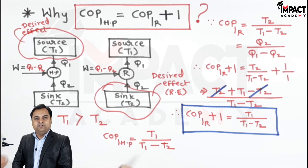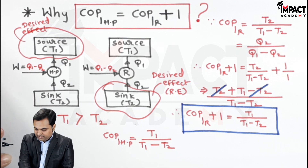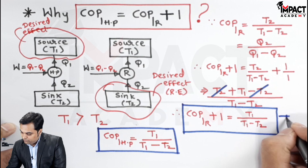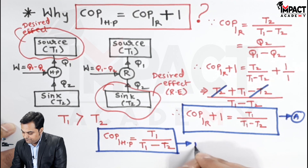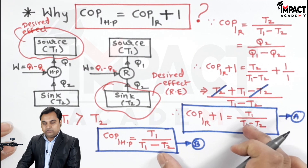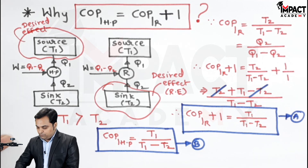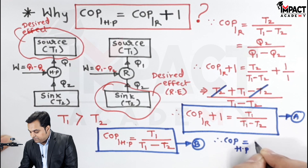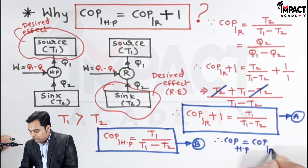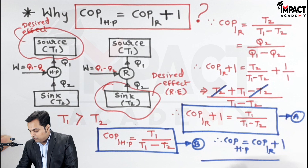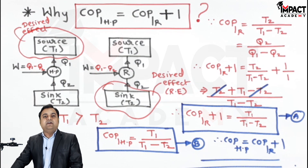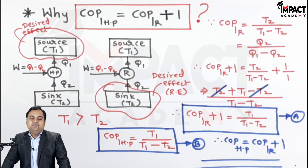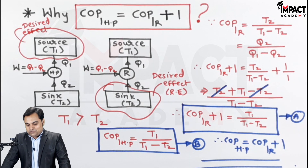Comparing equation A and equation B, both are equal. This proves that the COP of the heat pump will always be greater than the COP of the refrigerator by a value of 1. For example, if the refrigerator has a COP of 5, then the heat pump would have a COP of 5 + 1 = 6.